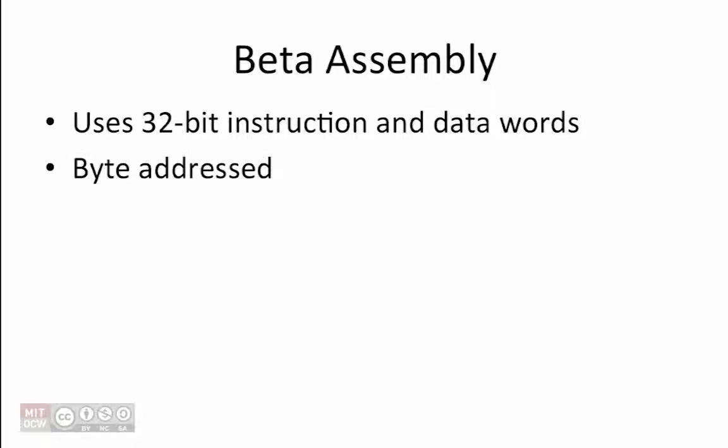As presented in lecture, in this course we use a simple 32-bit processor called the beta. The beta works on 32-bit instruction and data words. However, the addresses in memory are specified in bytes. A byte is made up of 8 bits, so each 32-bit instruction consists of 4 bytes.